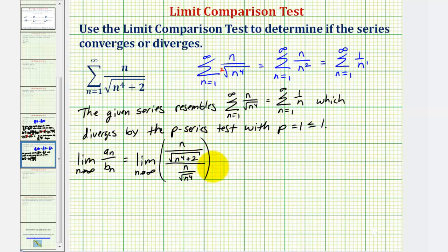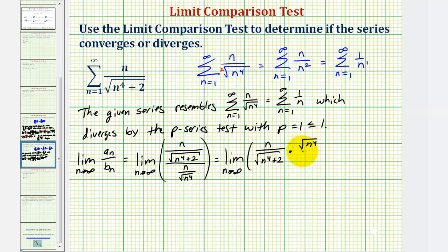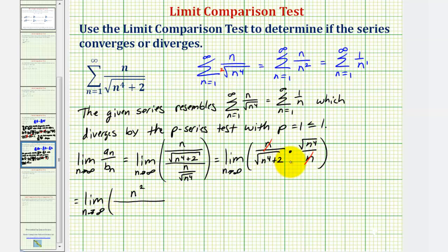For the next step, we'll write this quotient as a product by multiplying by the reciprocal of n over the square root of n to the fourth. So we have the limit as n approaches infinity of n divided by the square root of n to the fourth plus two, times the reciprocal — which is the square root of n to the fourth divided by n. Notice that n over n simplifies to one. We can simplify the square root of n to the fourth as n squared, giving us n squared divided by the square root of n to the fourth plus two.